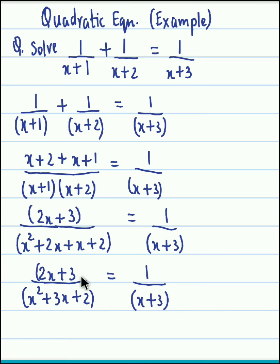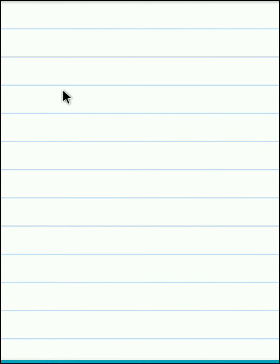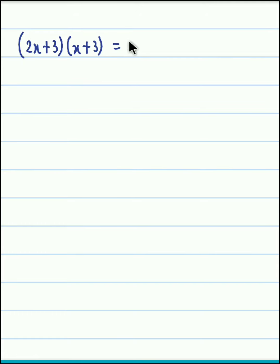Now we simply perform cross multiplication — this bracket is multiplied over here, and x squared plus 3x plus 2 gets multiplied on the right hand side. So on the left hand side we get 2x plus 3 into x plus 3, and on the right hand side it is 1 into x squared plus 3x plus 2.